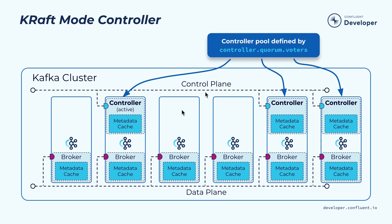This communication is done through a configuration that provides a list of all the controllers, including their endpoints with hostname and port. The active controller, as well as the other controllers, each maintain an in-memory metadata cache. This is useful because if the active controller fails, the remaining controllers can take over as the new controller much quicker, since they don't need to refresh their metadata — they already have an up-to-date in-memory copy. This is one of the ways KRaft is more efficient than the old ZooKeeper-based control plane.